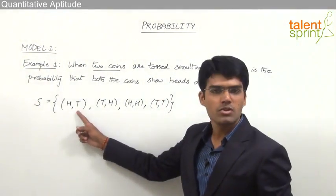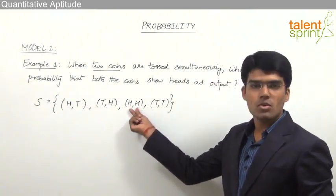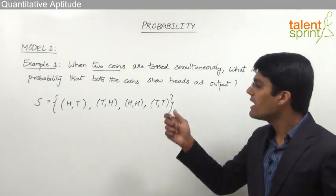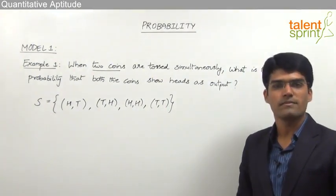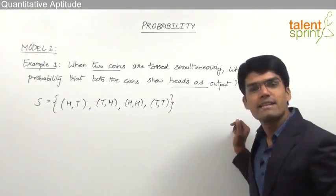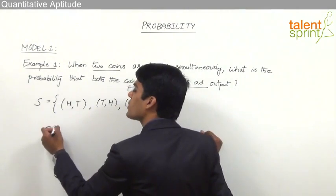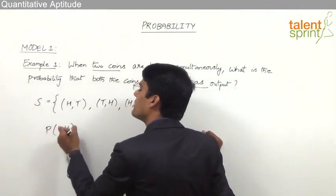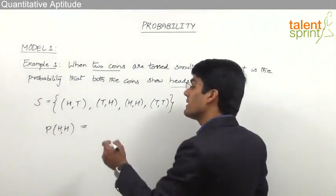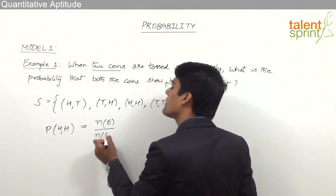The first coin can show head and second can show tail, or first can show tail and second can show head. Both coins can show heads, or both can show tails — there are no other possible outcomes apart from these four. We need to find the probability that both coins show heads. The probability of a particular event E is the number of outcomes in favor of that event divided by the total number of outcomes.